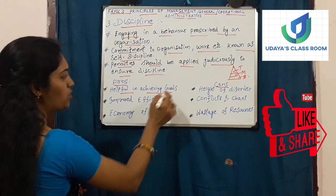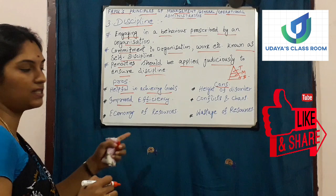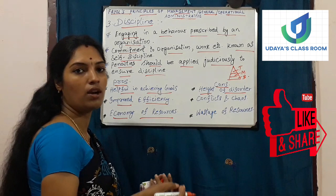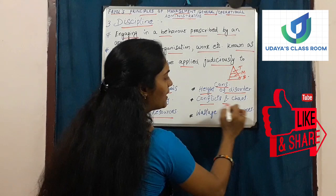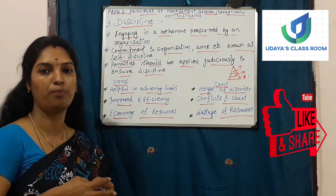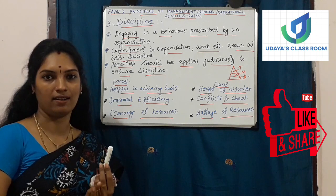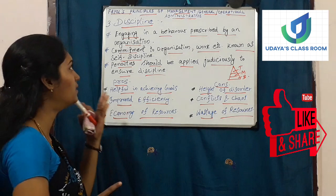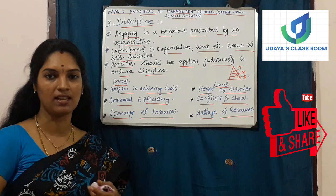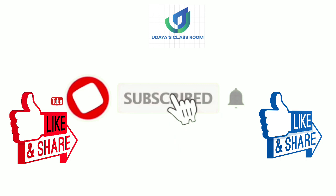The pros of Discipline are: it is helpful in achieving goals, it leads to improved efficiency, and it brings economy of resources. The cons of lack of discipline are: a height of disorder — no orderliness in the organization — conflicts and chaos, unnecessary conditions and conflicts, and wastage of resources. Today we discussed the three principles: Division of Work, Authority and Responsibility, and Discipline. With this I conclude today's class. I will meet you in the next class where I will explain the remaining Henry Fayol principles. Thank you.